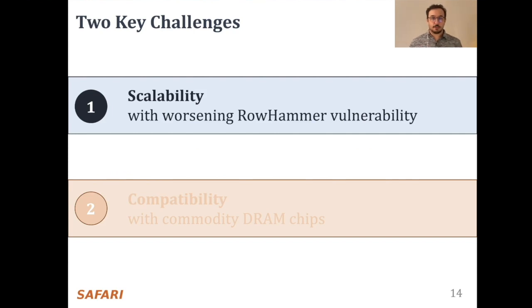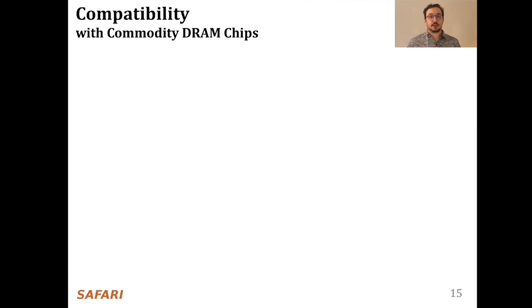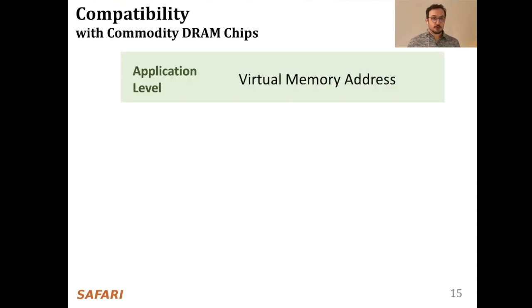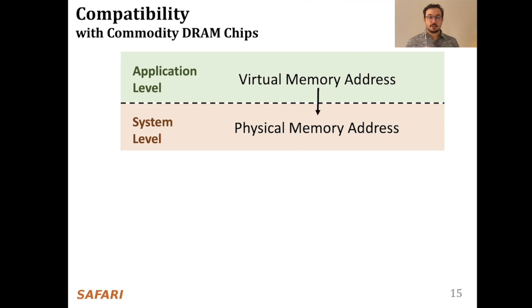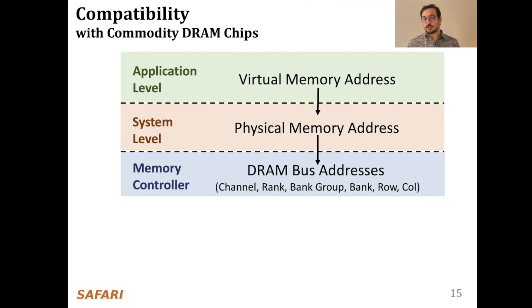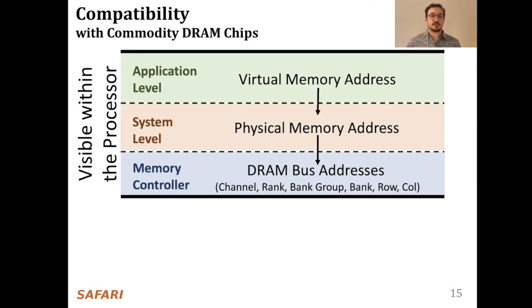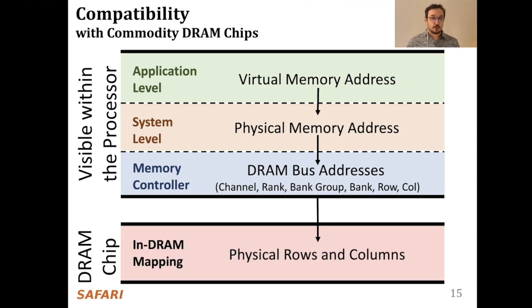The second challenge is compatibility with commodity DRAM chips. To understand this challenge, we need to revisit how memory addresses are mapped to DRAM cells through several abstraction levels. Virtual memory addresses are used at the application level. Then, typically, the system software translates virtual addresses to physical addresses. A physical memory address is mapped to addresses of DRAM channel, rank, bank, row, and column within the memory controller. So far, all these address translations are visible within the processor. However, additionally, logical row and column addresses are mapped to physical rows and columns within the DRAM chip, which is not visible to the rest of the system.